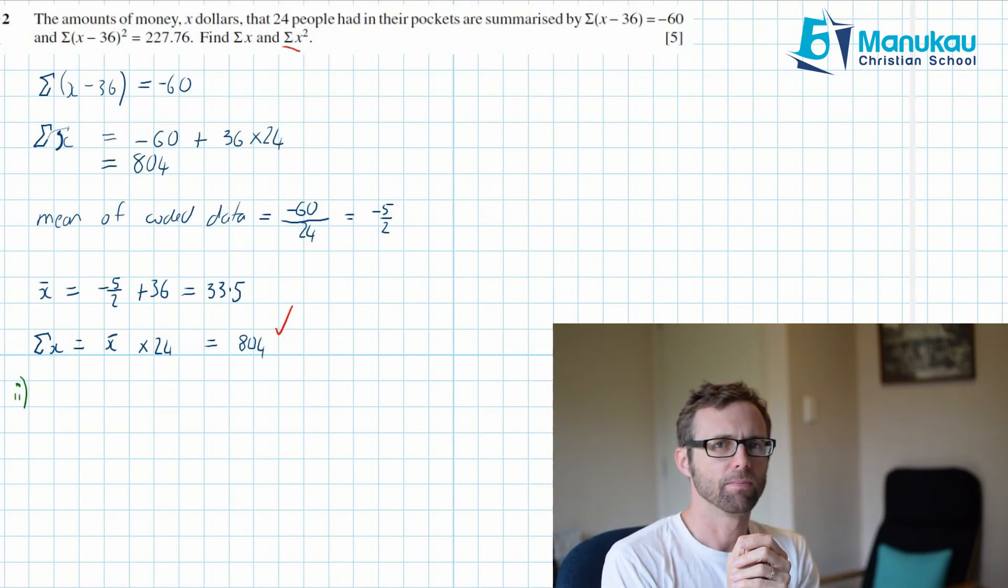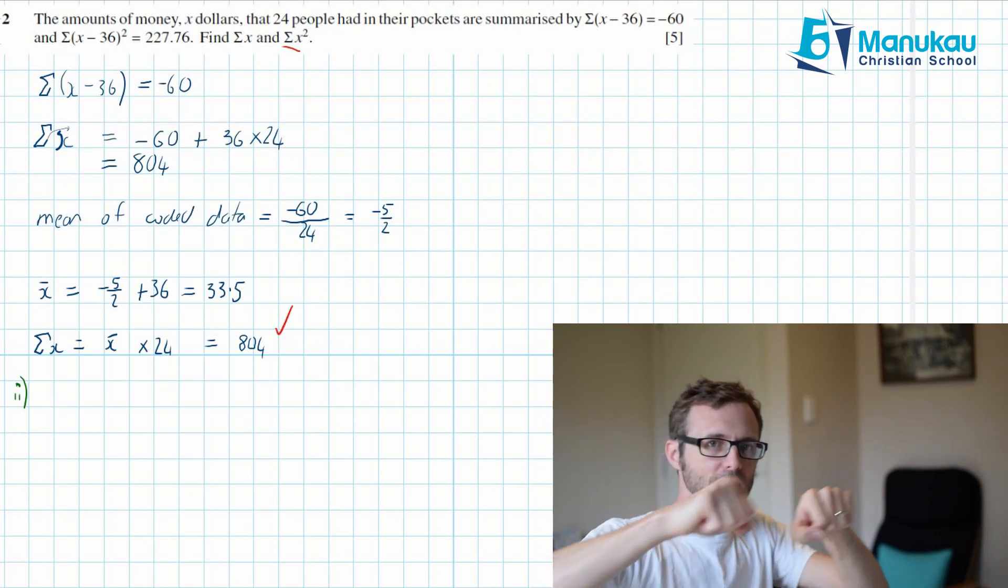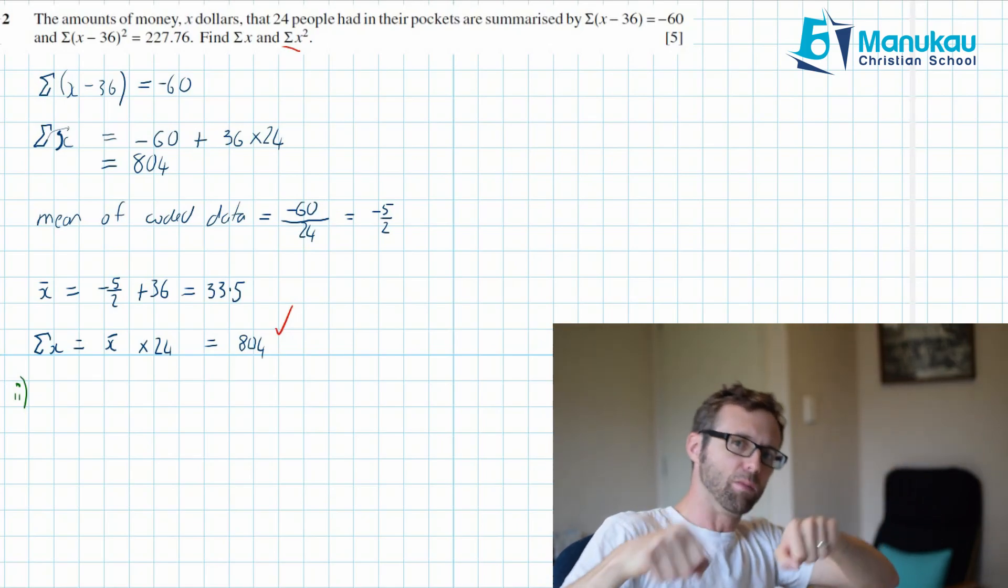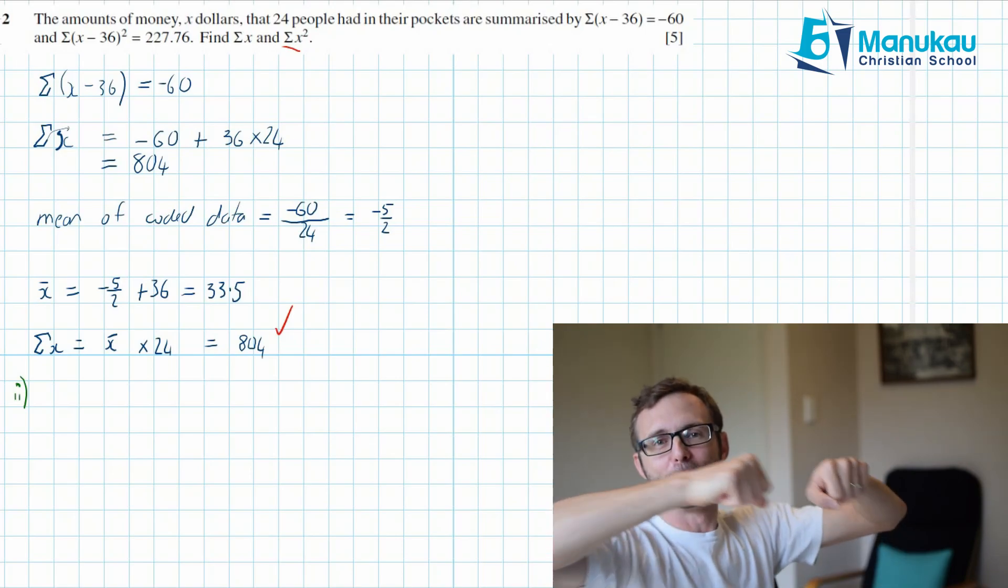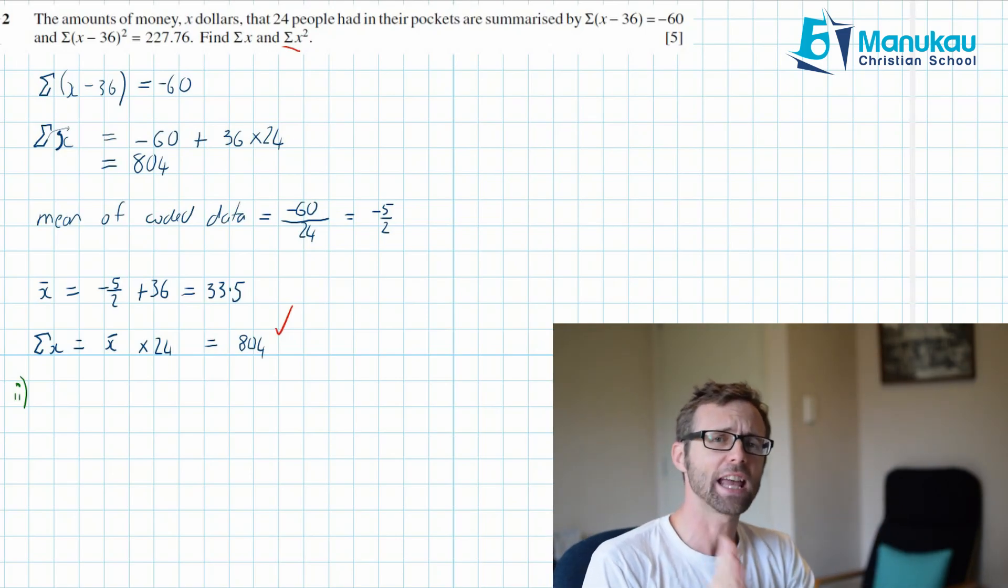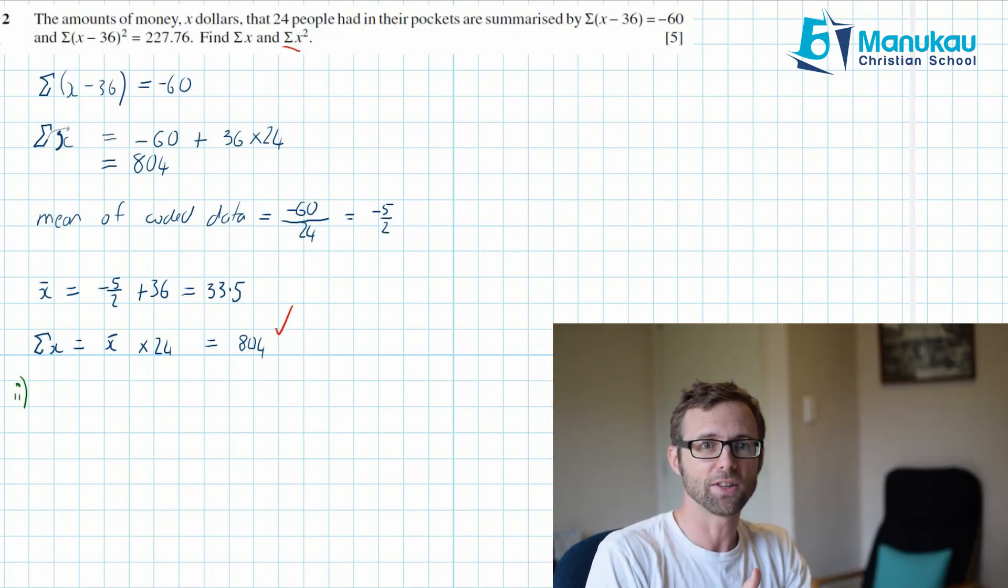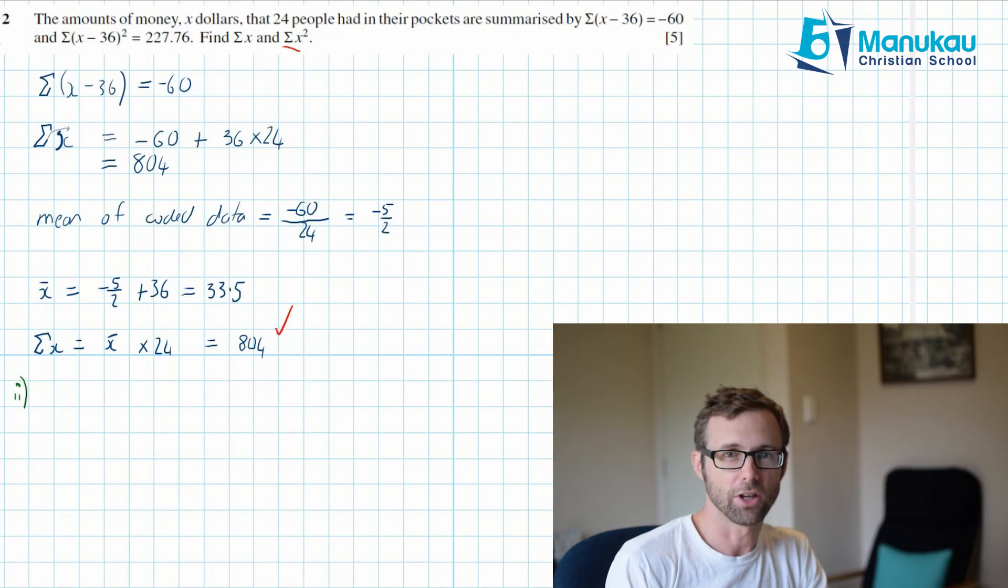As we discussed at the beginning we've taken 36 off every point of data. Has the spread changed? No it hasn't. If you imagine all of your points of data and each one of them is just moving minus 36, they're still going to be the same distance apart. So that means that your standard deviation, a measure of your spread, is going to be the same for the coded data and for the uncoded data. So why don't we work out the standard deviation for the coded data because we've got everything we need for that.